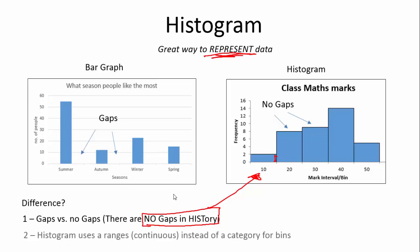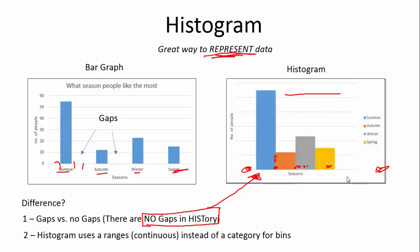Another difference is the fact that histograms use ranges, continuous, instead of categories for bins. So here we have a category where summer, autumn, winter, spring is the bin. When I say bin, I mean this group here that represents the data. For example here, we have our class marks, our maths class marks. This 10 here would be the bin from 0 to 10. This bin here would be from 11 to 20. This bin here would be 21 to 30. These bins are continuous. It goes all the way from 0 to 50. There are no categories. So that's another important thing.